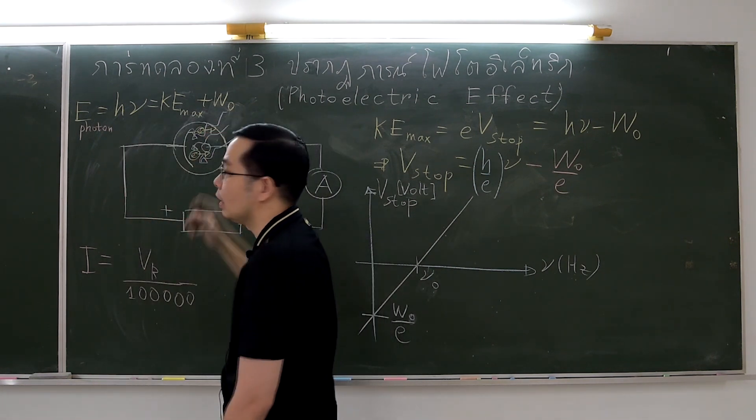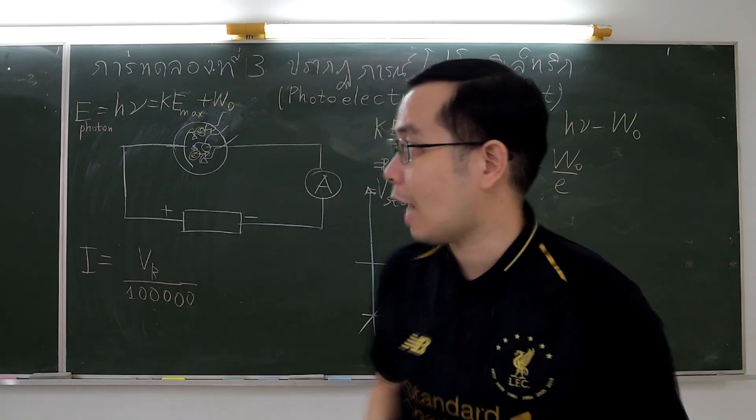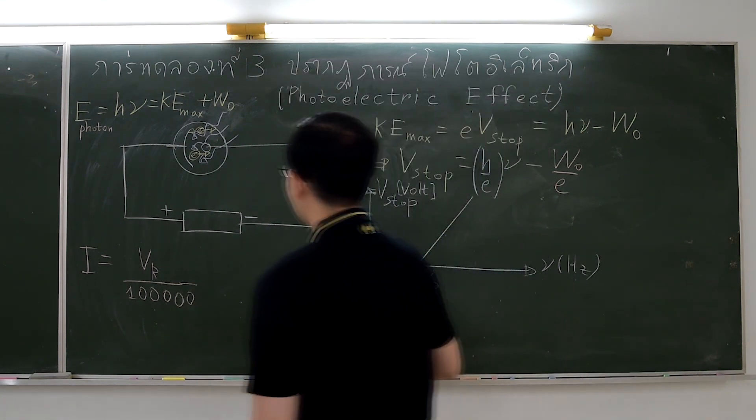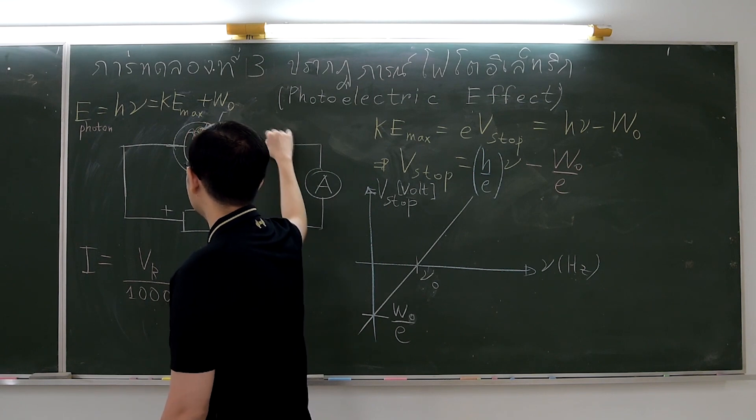At that time, he could not explain why the current depends on the light frequency, but not on the light intensity as the classical concept described.